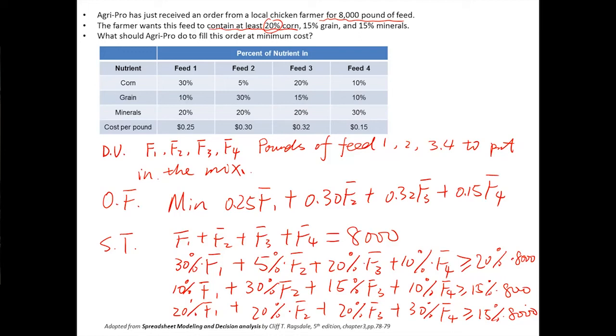For the mineral one, if we look at the mineral percentage contained in all the feed, it's at least 20%. Here it requires at least 15%. That means no matter how you mix them, the mineral requirement will be met. This is a redundant constraint because it will be fulfilled anyway. With or without it, it will be the same.